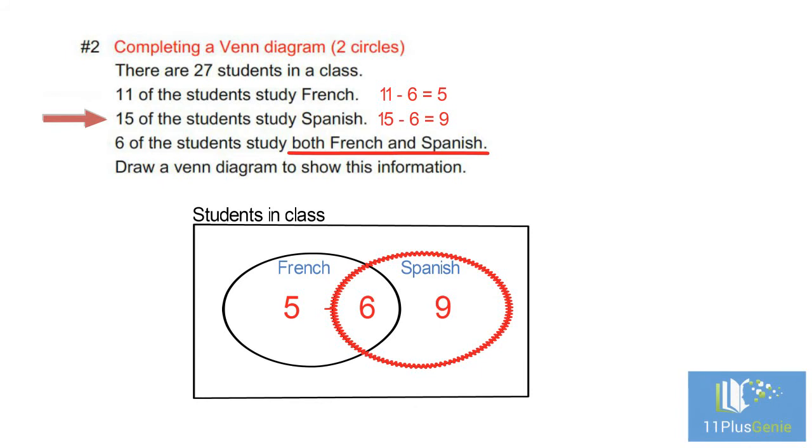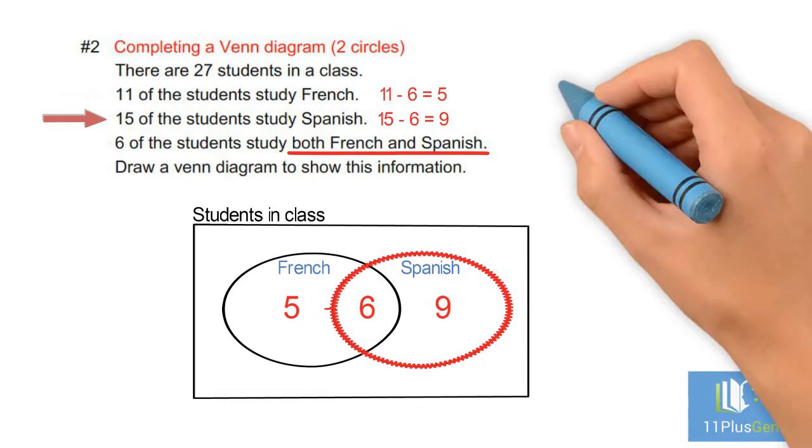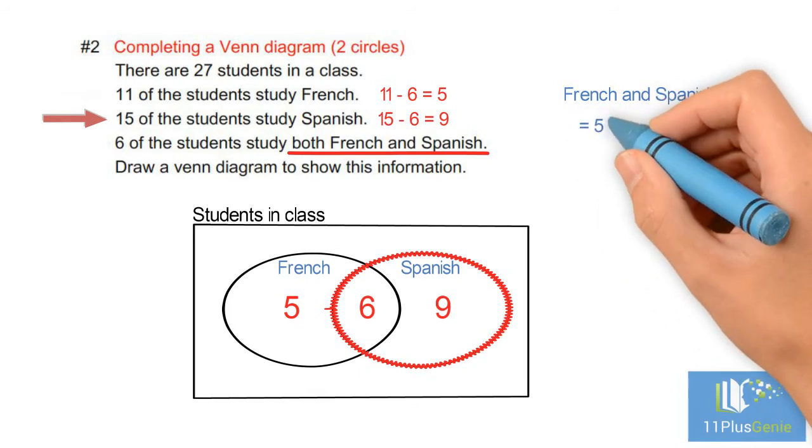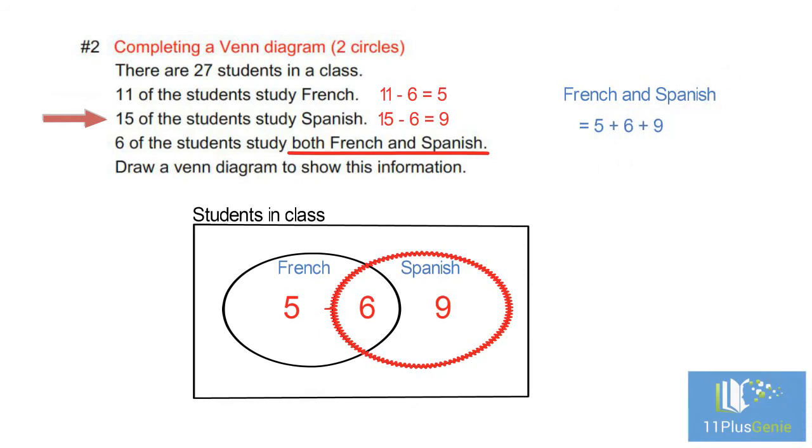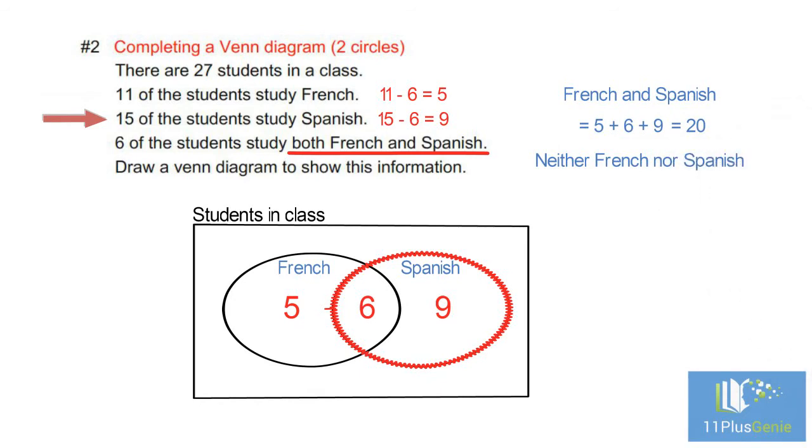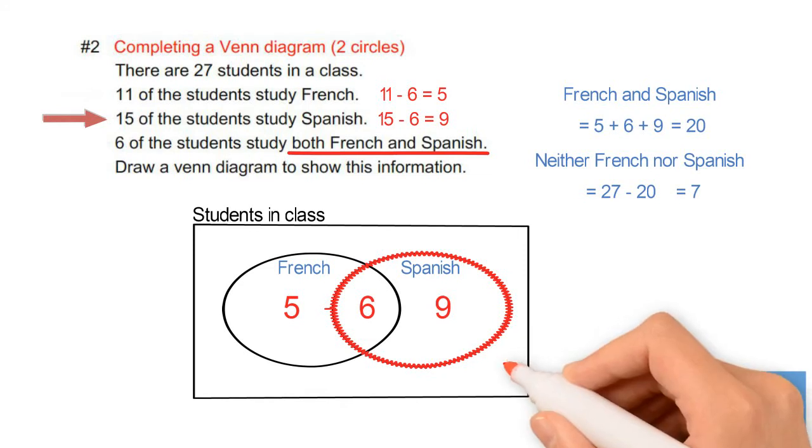There are also students who study neither French nor Spanish. To find the number of students who study neither, we add the numbers in the diagram and we need to subtract it from the total number of students in the class. 5 add 6 add 9 equals 20. There are 27 students in the class. 27 minus 20 equals 7, and we write this 7 outside both circles.